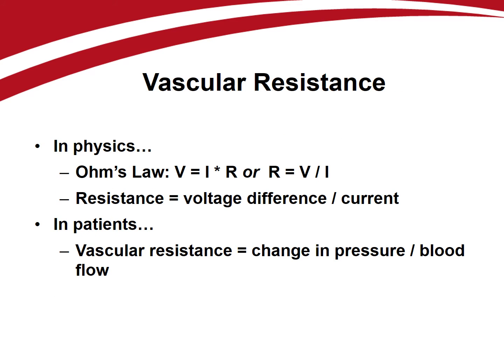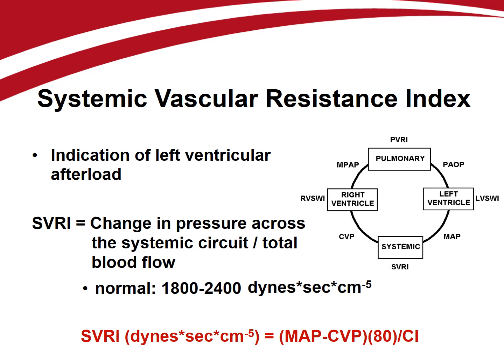The second physics equation to remember is Ohm's law: voltage equals current times resistance. Rearranging, resistance equals voltage divided by current. We can use this to calculate the resistance through each circuit, or the afterload of each pump. In patients, vascular resistance equals the change in pressure across the circuit divided by the current, or blood flow. The systemic vascular resistance index is thus the change in pressure across the systemic circulation — mean arterial pressure minus central venous pressure — divided by blood flow or cardiac index. To make the units work out right, we use a correction factor of 80.